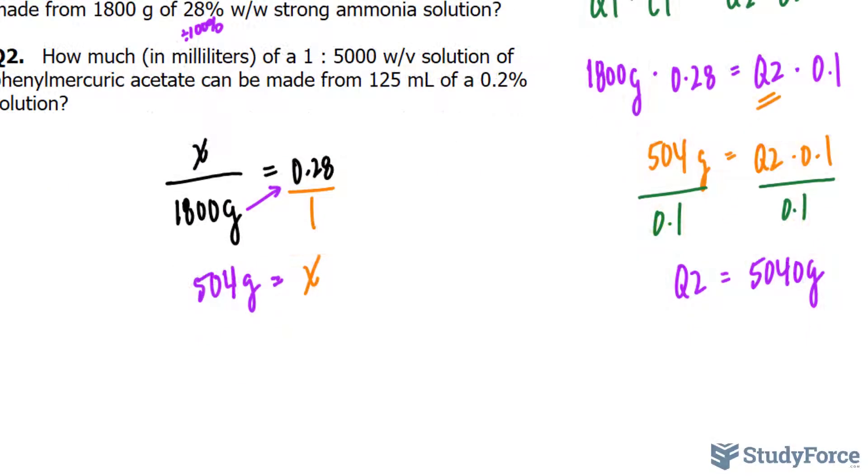Now when you dilute something, the amount of active ingredient doesn't change. So I'll create another fraction, where this time the total amount is unknown. But when you divide 504 by that total amount, you should get a desired strength of 0.10.